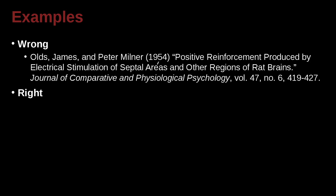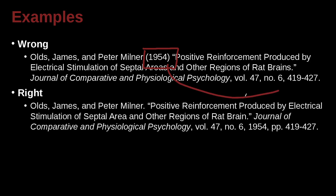Let's look at some examples of specific MLA reference list entries. We have Olds, James, and Peter Milner. 'Positive reinforcement produced by electrical stimulation of septal areas and other regions of rat brains.' That's the title of the paper, and it's inside the Journal of Comparative and Psychological Psychology, Volume 47, Number 6, and here is the page number. The problem is right here — the date. This is the APA method to put it there. In the MLA, this goes down at the end. So let's look at the correct way.